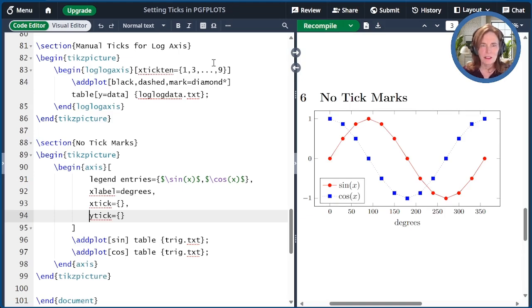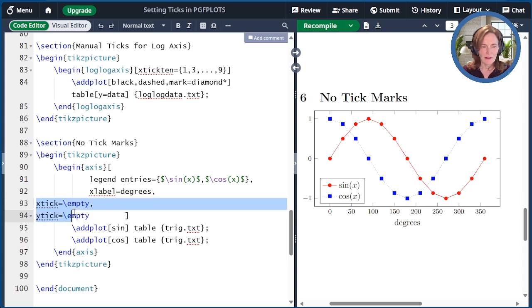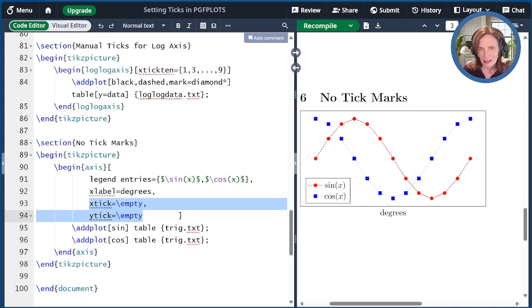So we need a different way. You need a special incantation, which is slash empty. So let me show you what that looks like. Here we have y tick equals slash empty, x tick equals slash empty. When I compile that, the tick marks are gone as we wished.